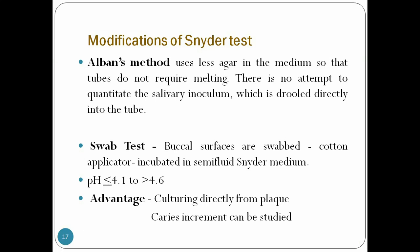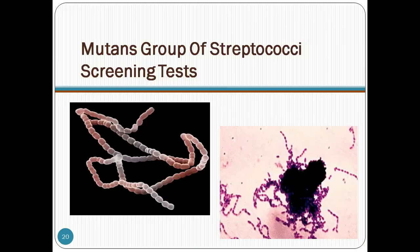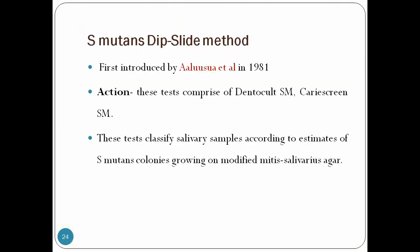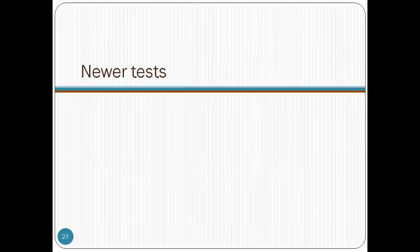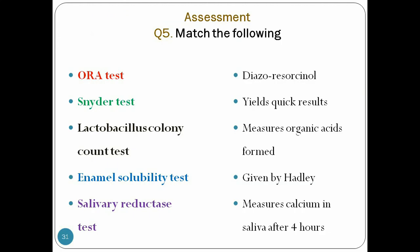Other examples of caries activity tests include the 4T calcium dissolution test, checking streptococcus using a toothpick tongue blade and dip slide method, the reductase test, and the Aura test, which is a recent invention. We need to study only the Schneider test, which is commonly asked in exams. Thank you.